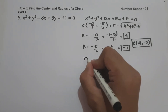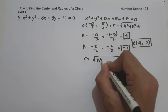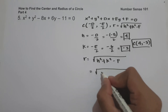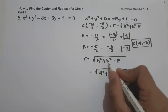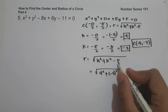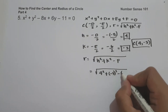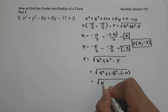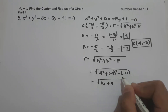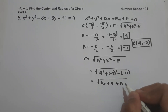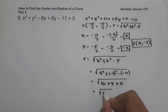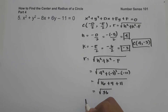To find the radius, we use square root of h squared plus k squared minus f. So this is square root of 4 squared plus (negative 3) squared minus f, where the value of f is negative 11. So this becomes square root of 16 plus 9 minus (negative 11), which is square root of 16 plus 9 plus 11, giving square root of 36. The radius is 6. And this will be our answer.